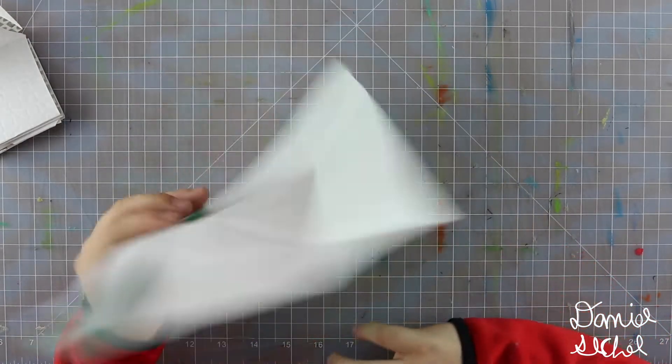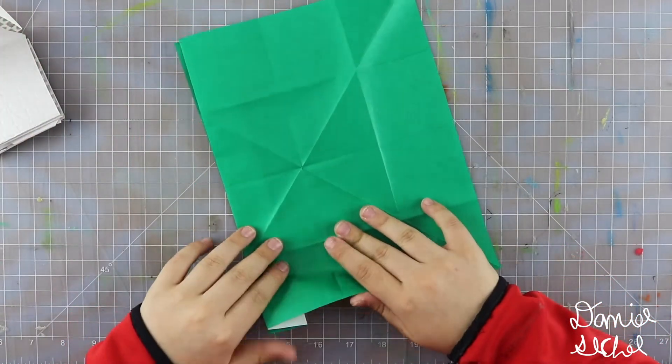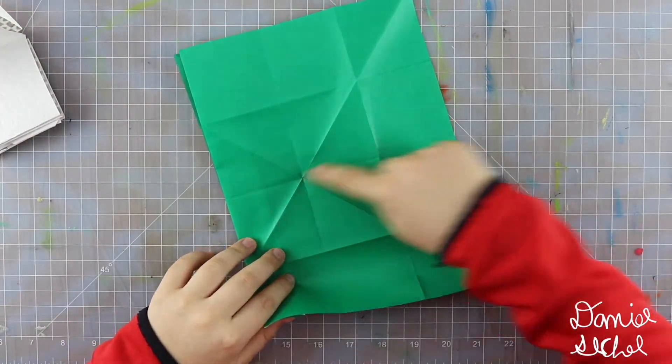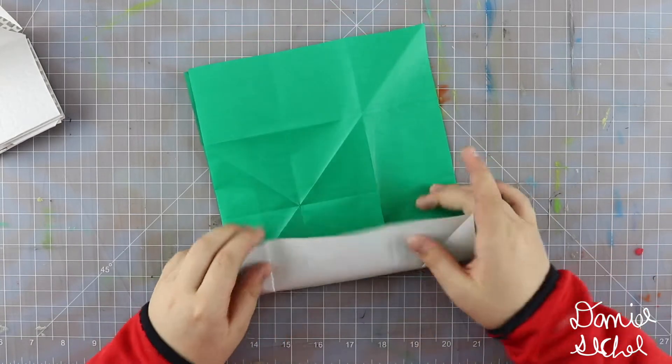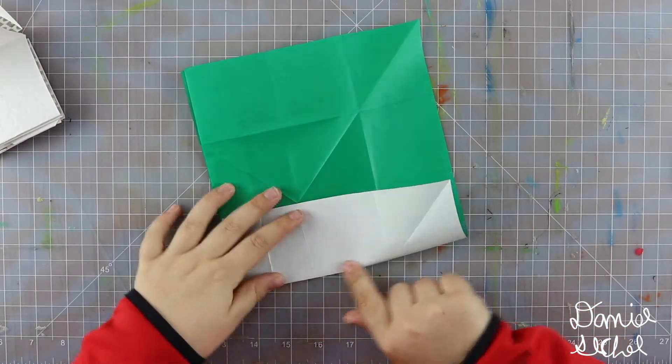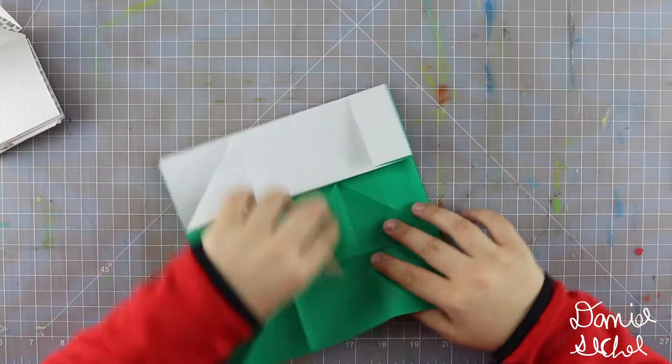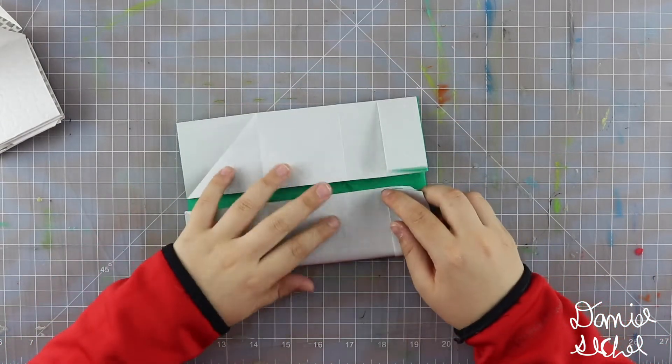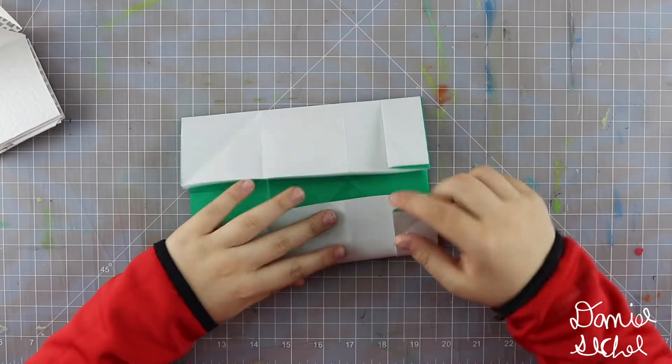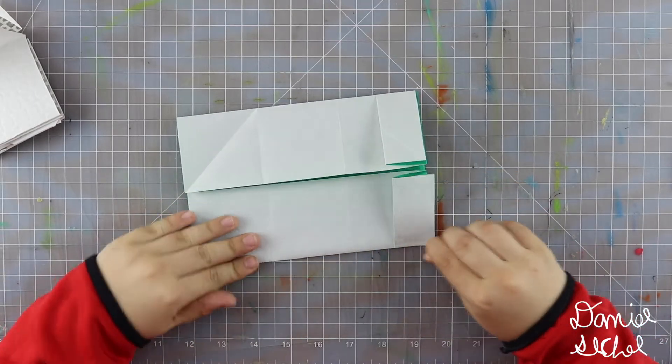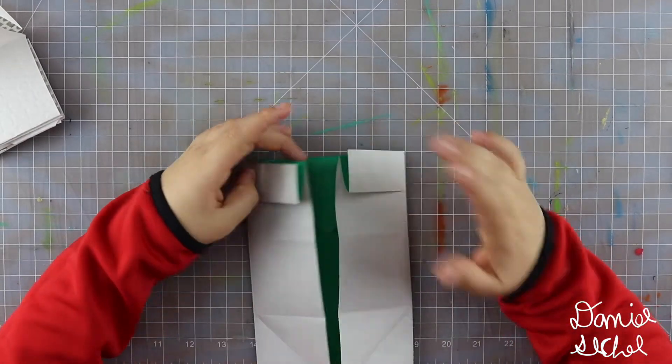Unfold, turn over, now fold this edge to that crease along this existing crease. So then it's like that. Rotate, and do the same. Insert this edge to that crease. So now you have this. Do not unfold.